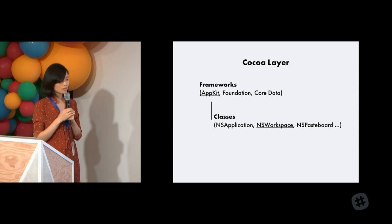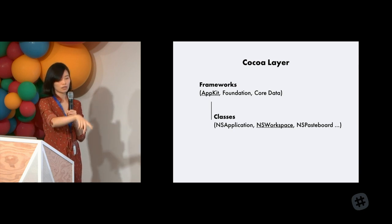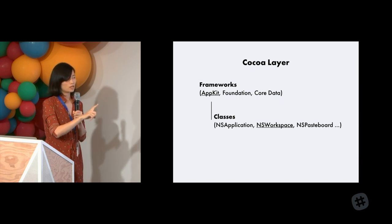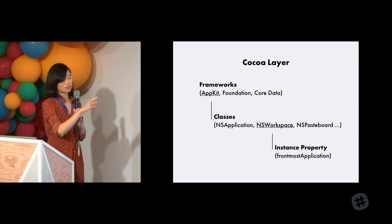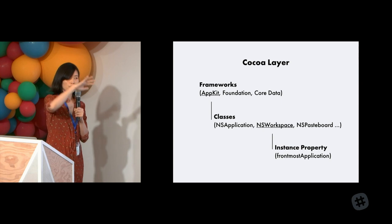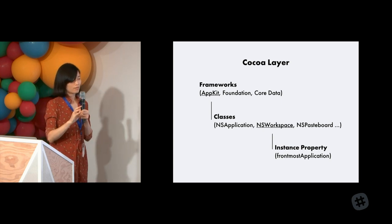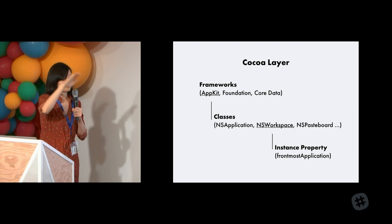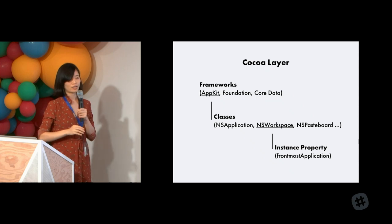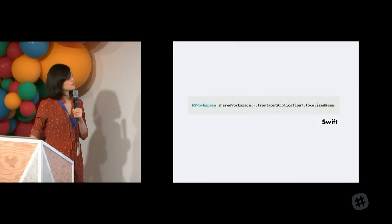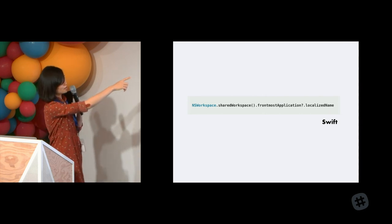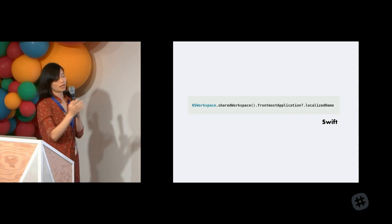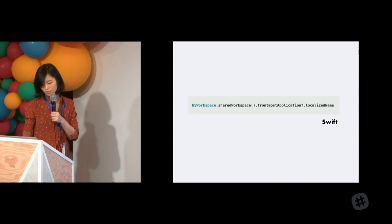NSWorkspace launches an app and looks into the app cache. Every single application has one NSWorkspace. NSWorkspace has a utility function that gets you into the shared workspace. Among the umbrella of the shared workspace, you can find what is the frontmost application. To summarize in Swift, it looks like: NSWorkspace.shared (the utility function), and from there you can find the frontmost application and get its name.